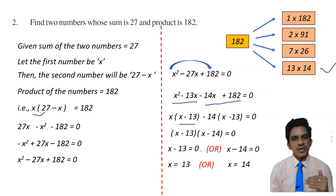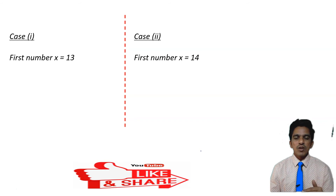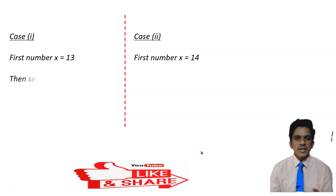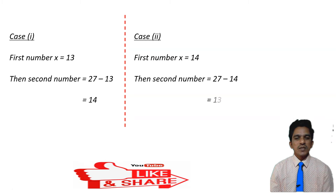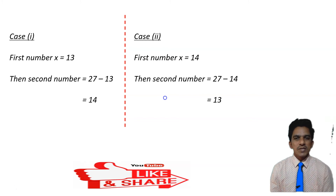Since we have to find the numbers, we extend the solution. Take x equals 13 as case 1 and x equals 14 as case 2. We had taken the first number as x and the second number as 27 minus x. In case 1, the second number is 27 minus 13, which equals 14. In case 2, the second number is 27 minus 14, which equals 13. So in both cases the two numbers are 13 and 14.